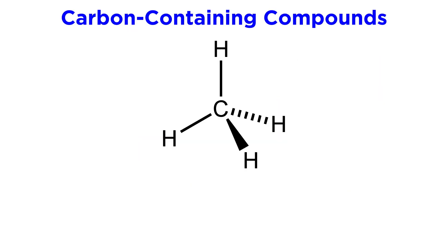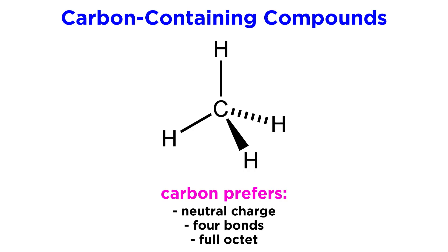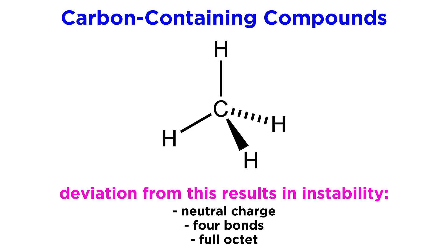In learning organic chemistry, we have been dealing with a variety of carbon-containing compounds. As we know, carbon atoms are most stable when they are of neutral charge and participating in precisely four covalent bonds, so as to possess a full octet. So when carbon atoms deviate from this configuration in one way or another, we get an unstable and therefore highly reactive species.